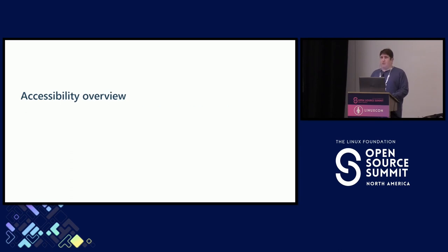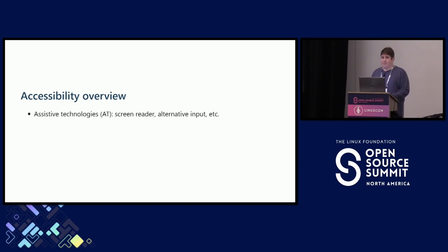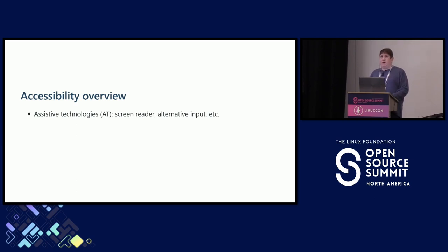Let me give a quick overview of some key terms and concepts in accessibility. When we talk about accessibility, we're talking about making applications accessible to disabled people who depend on assistive technologies, such as screen readers, alternative means of input such as speech recognition, and screen magnifiers. Those are the three main categories of assistive technology, or AT for short.